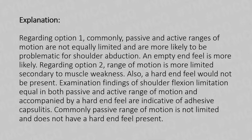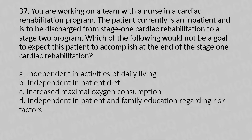Moving to our 37th question. You are working on a team with a nurse in a cardiac rehabilitation program. The patient is currently an inpatient and is discharged from Stage 1 cardiac rehabilitation to a Stage 2 program. Which of the following would not be a goal to expect this patient to accomplish at the end of Stage 1 cardiac rehabilitation? Option A: Independent in activities of daily living. Option B: Independent in patient diet. Option C: Increased maximal oxygen consumption. Option D: Independent in patient and family education regarding risk factors. And the answer is...